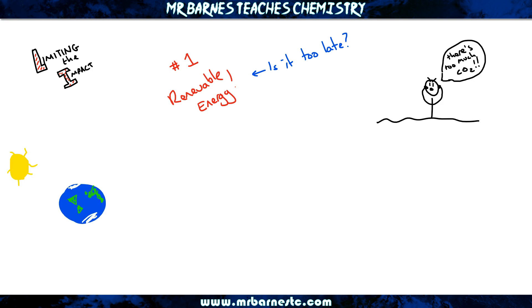So what else can we do? Some people have suggested doing something to reflect the sun's rays back — not building a large mirror, but the idea is very similar. If we reflect the sun's rays back, the advantage is less heat energy absorbed. However, it's really, really difficult to do; it's not an easy task.